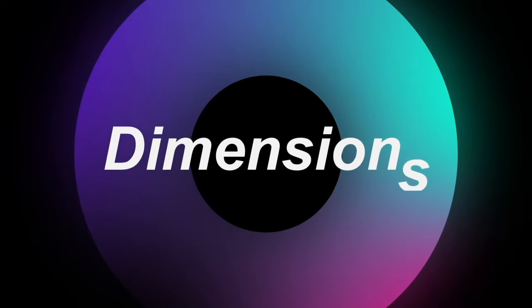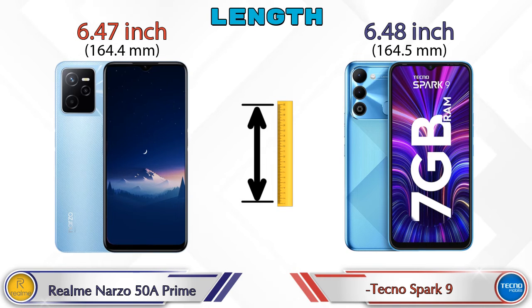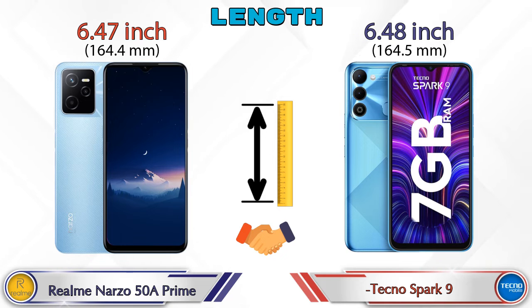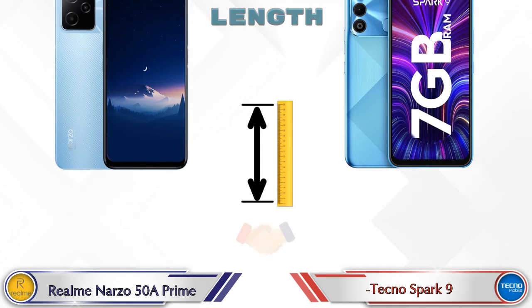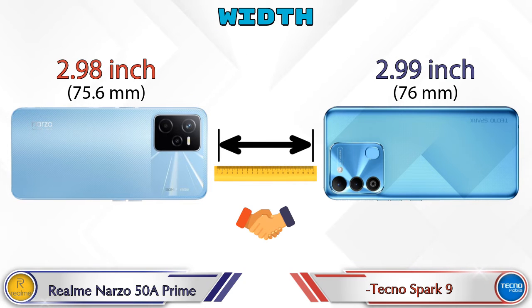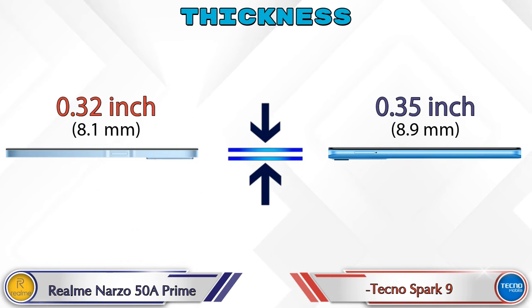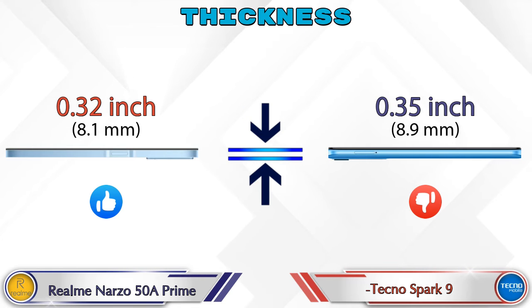Now let's check the dimensions. The length of the 50A Prime is 6.47 inches and the Spark 9 is 6.48 inches — almost the same. Width is 2.98 inches for the 50A Prime and 2.99 inches for the Spark 9, again almost the same. Thickness is 0.32 inches for the 50A Prime and 0.35 inches for the Spark 9, making the Spark 9 slightly thicker.